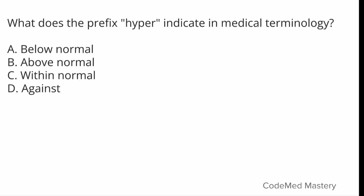Next question: what does the prefix hyper- indicate in medical terminology? Option A: Below normal, Option B: Above normal, Option C: Within normal, Option D: Against. The right answer is Option B: above normal. The medical prefix for below normal is hypo-, the prefix for within normal is normo-, and the prefix for against is anti-.